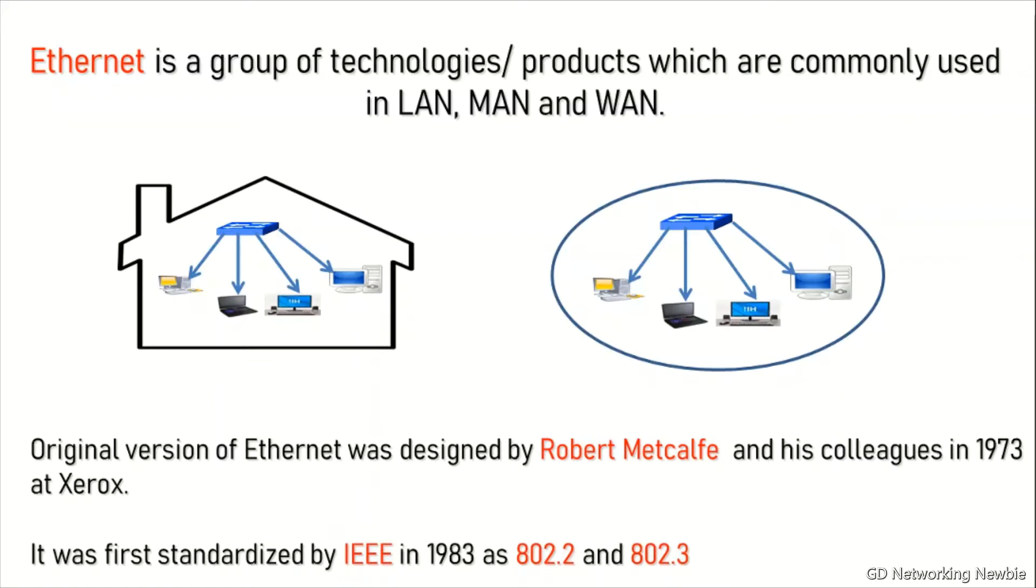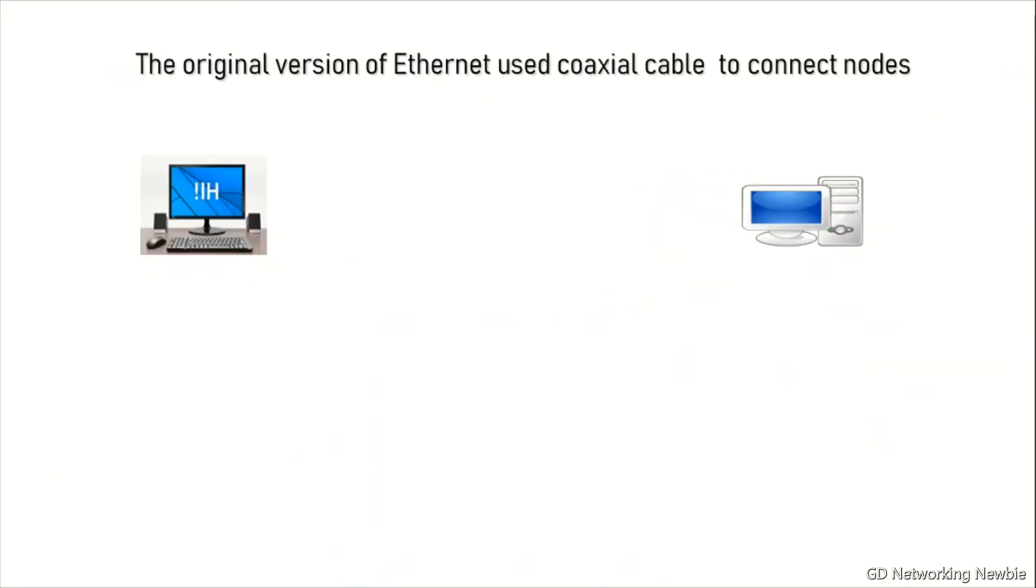It was first standardized by IEEE in 1983 as 802.2 and 802.3, and the original version of Ethernet used coaxial cable to connect the nodes.